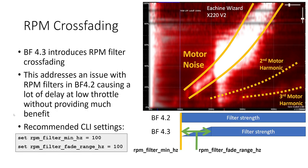Now Betaflight 4.3 introduces a new feature that's really cool called RPM filter crossfading and this addresses an issue which we had with RPM filtering in Betaflight 4.2 where at low throttle positions the RPM filters would park down at 100 hertz and they would create a lot of delay and not provide much benefit because there's not much motor noise when the throttle position is that low. To address this Betaflight 4.3 introduced RPM filter crossfading which allows the strength of the filter to ramp up as the RPM of the motor increases.